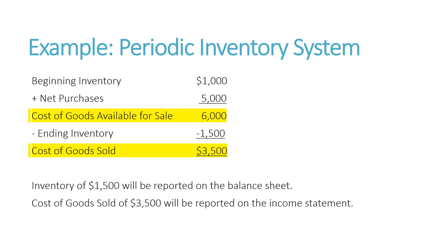So hopefully you took a moment and did this calculation. Beginning inventory is $1,000, net purchases are $5,000, so cost of goods available for sale is $6,000. We subtract out the ending inventory of $1,500 and cost of goods sold is $4,500. The company would then make an adjusting entry at the end of the accounting period to remove the purchases account from the books and record cost of goods sold and update the inventory balance. So that inventory of $1,500 is going to be reported as a current asset on the balance sheet, and cost of goods sold will be reported on the income statement.